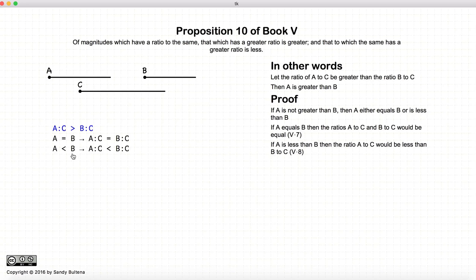If A is less than B, we have A to C is less than B to C according to Proposition 8. And again, this does not agree with our original condition.